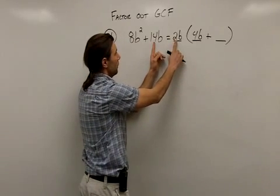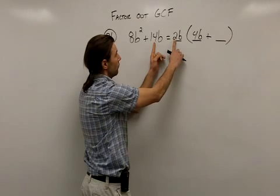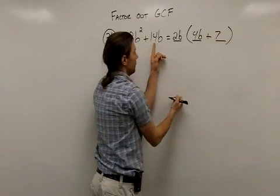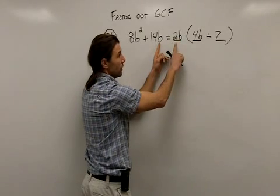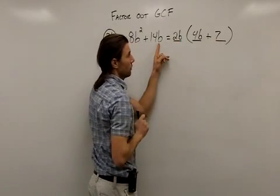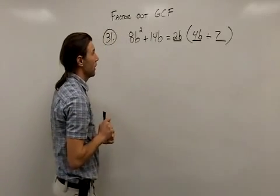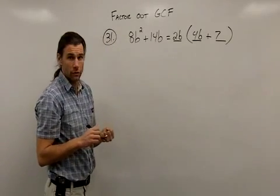Going to the next term. 14 and 2, if I divide a 2 out of 14, I'll have a 7. And if I divide b by b, I get 1. So there aren't any b's left. So there's my factoring when I factor the greatest common factor out of these two terms.